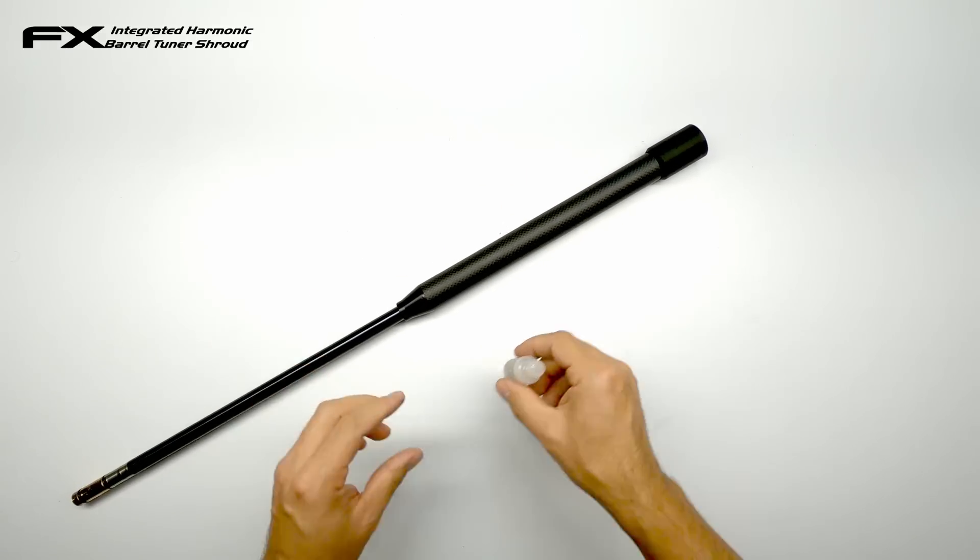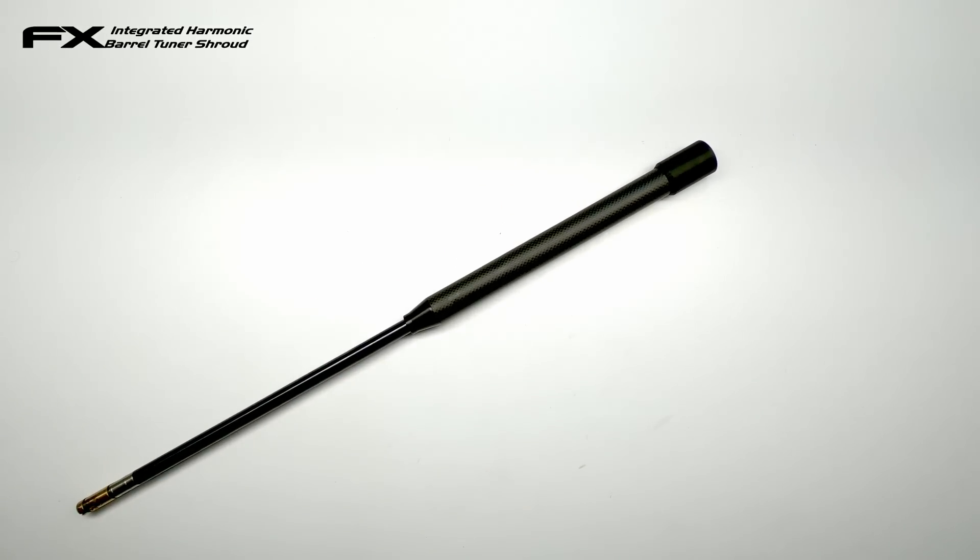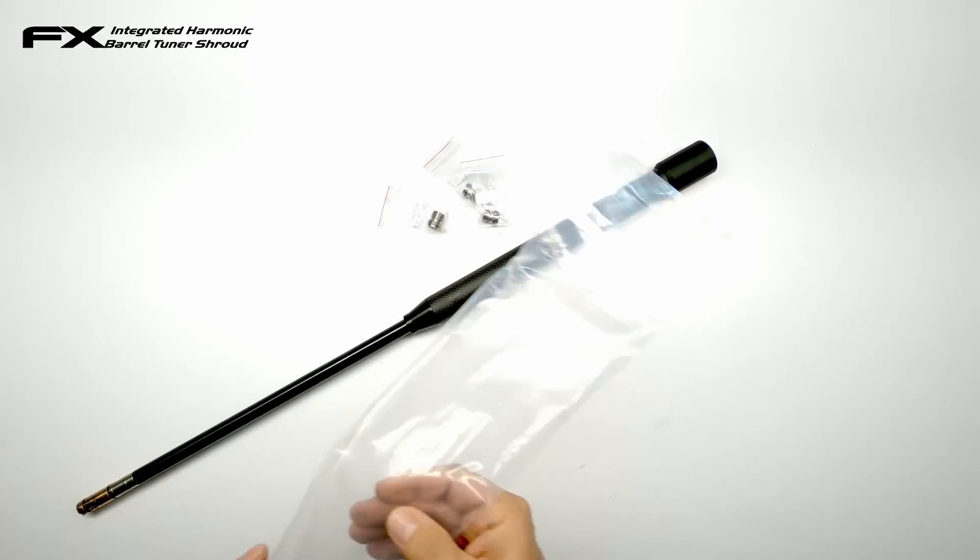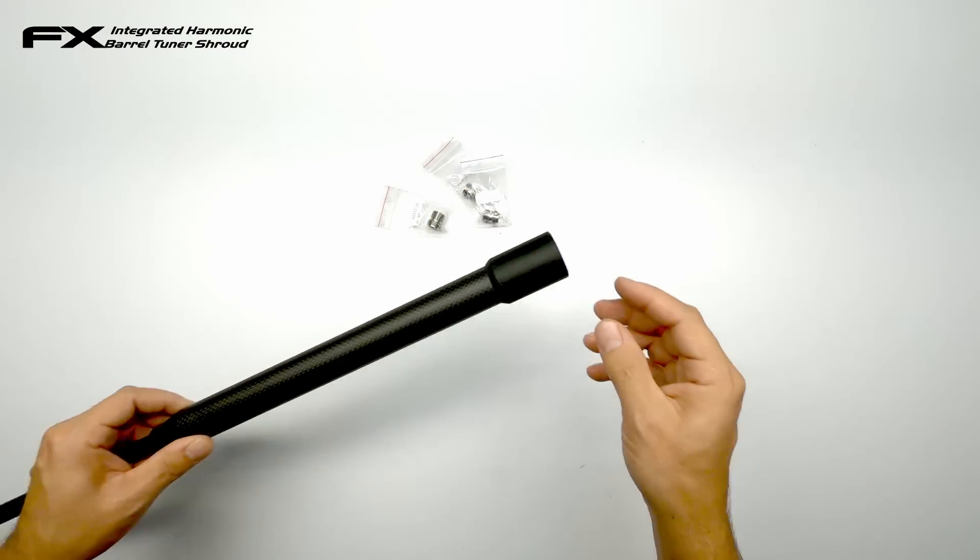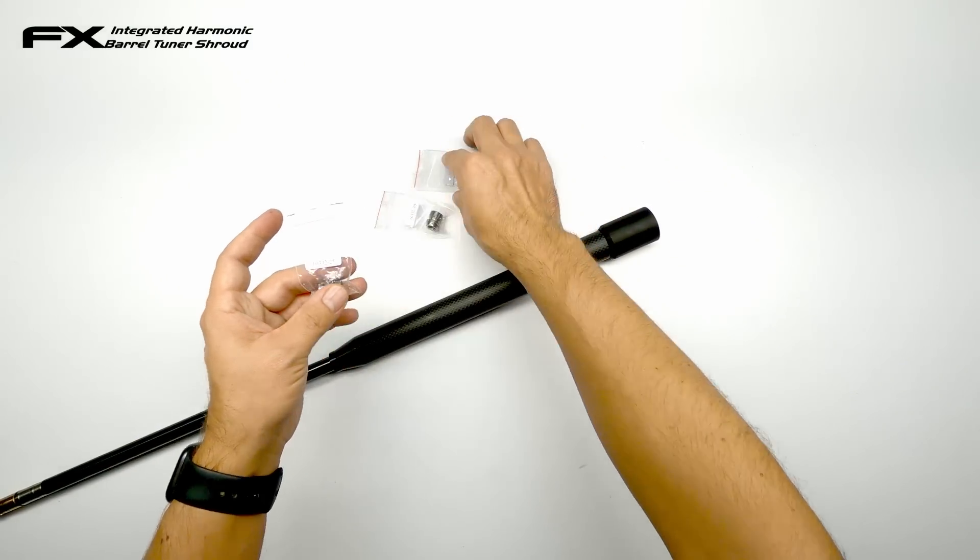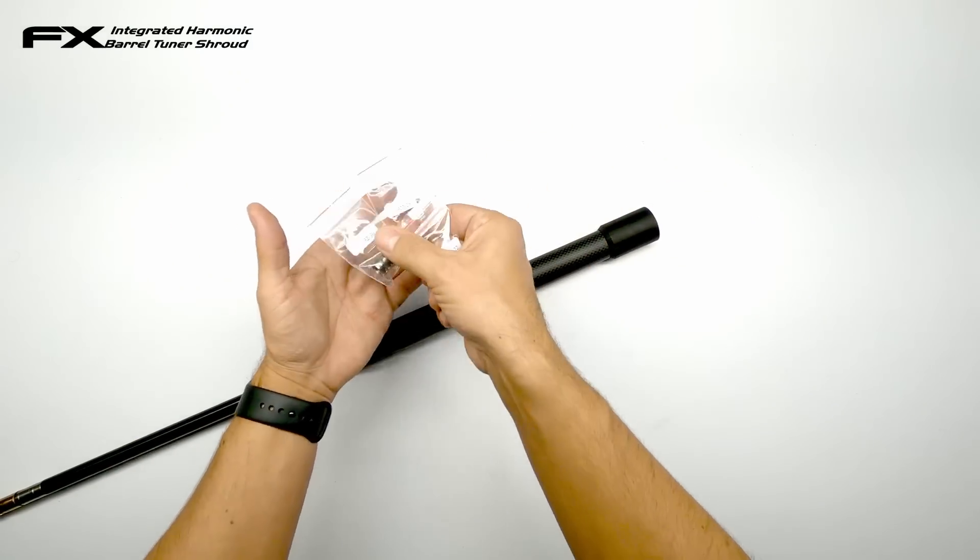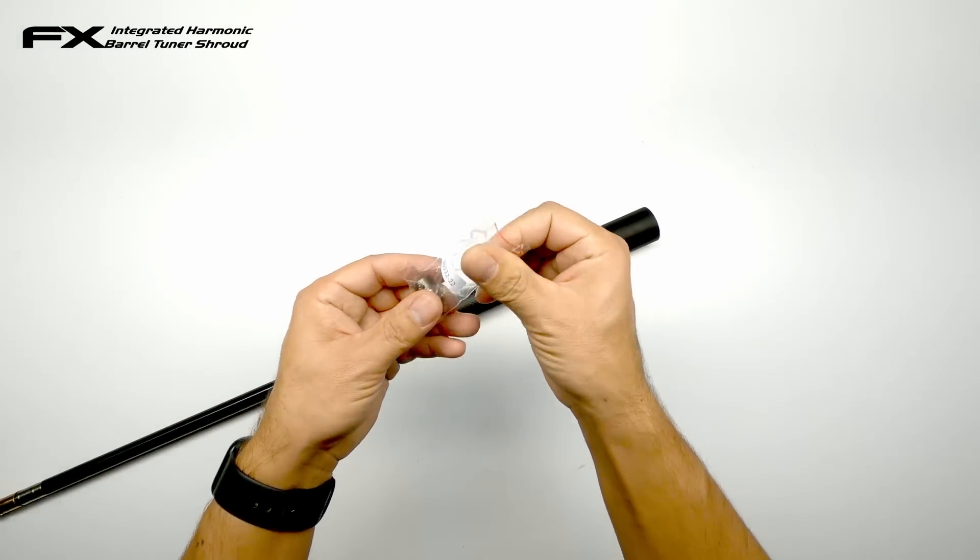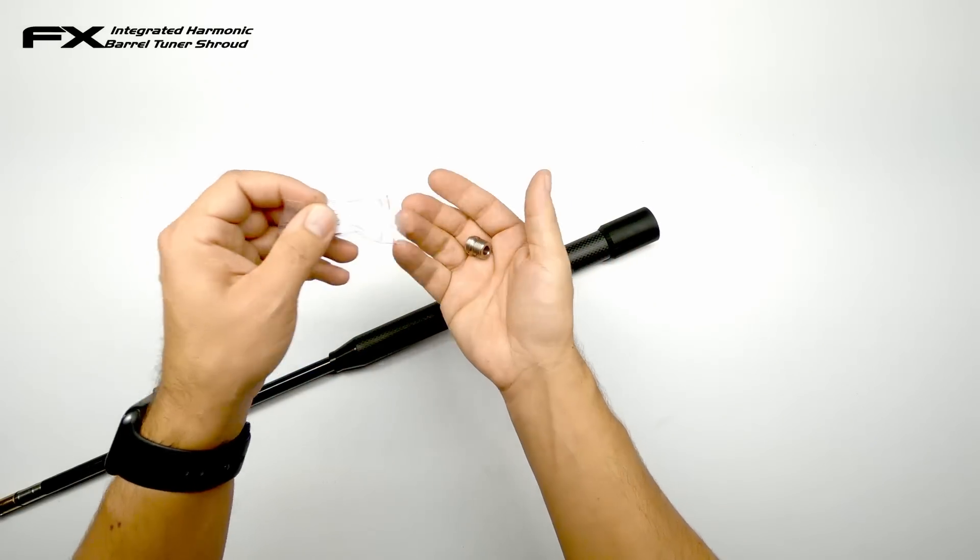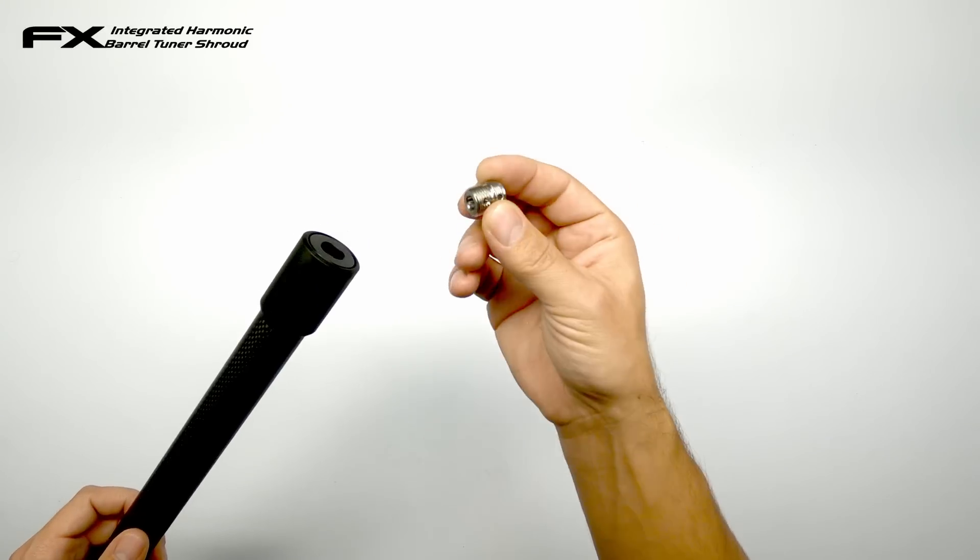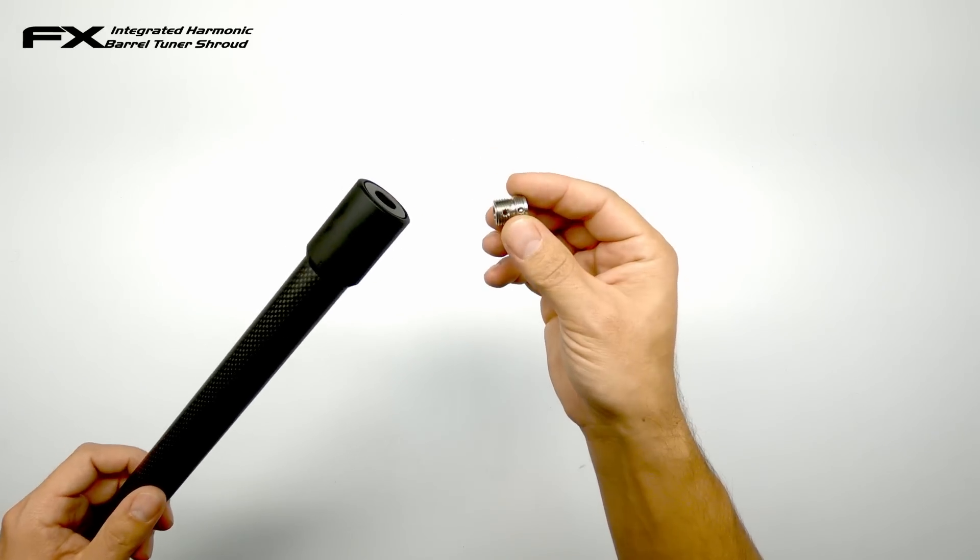Put the oil to the side. And then also in your bag you will find three of these. That will have to go on the end here. One is for a 25 caliber, a 22 caliber and a 30 caliber. We're using the 22 so we take the one for the 22.